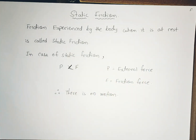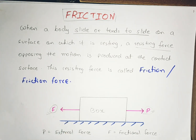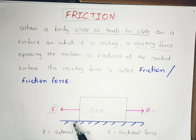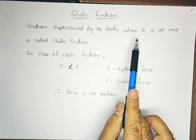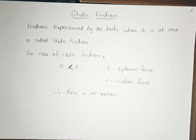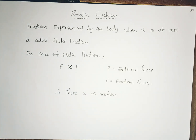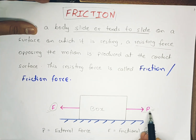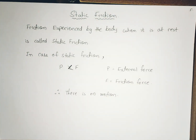Static friction is the friction experienced by a body when it is at rest. As we discussed with the box example, when we apply force to the box and it does not move, that is due to friction. Even though the box is not moving, it experiences a frictional force — that is called static friction. In static friction, the applied external force P is less than the limiting friction force F, so there is no motion.